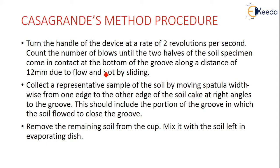Then turn the handle of the device at the rate of 2 revolutions per second. Count the number of blows until the two halves of the soil specimen come in contact at the bottom of the groove along a distance of 12 mm due to flow and not by sliding. Then collect a representative sample by moving a spatula widthwise from one edge to the other edge of the soil cake at right angles to the groove, including the portion close to the groove.